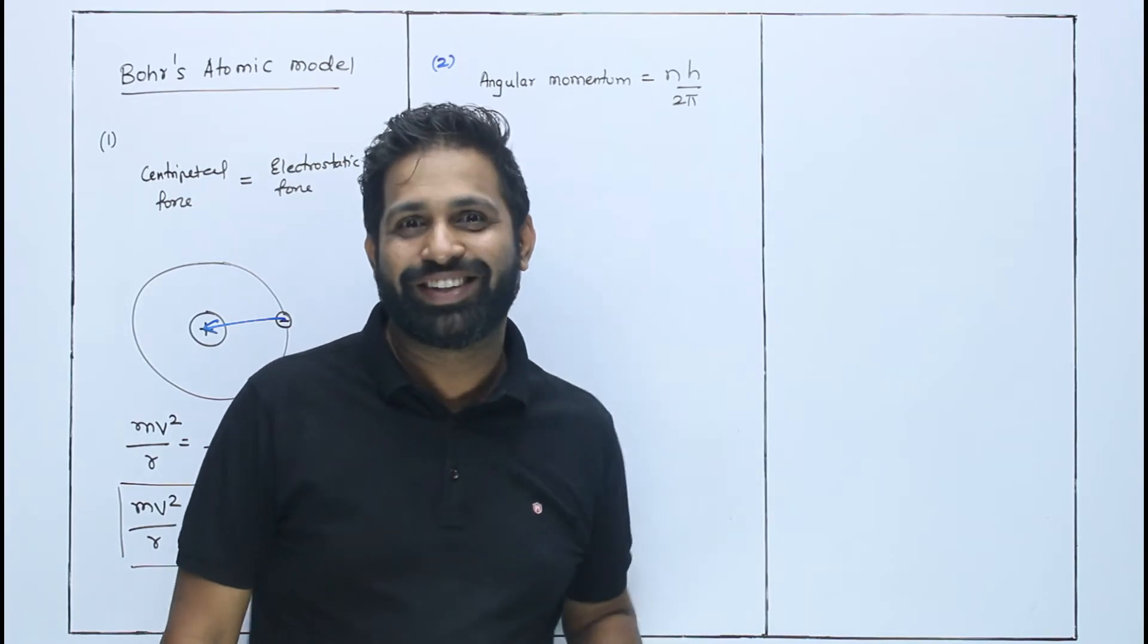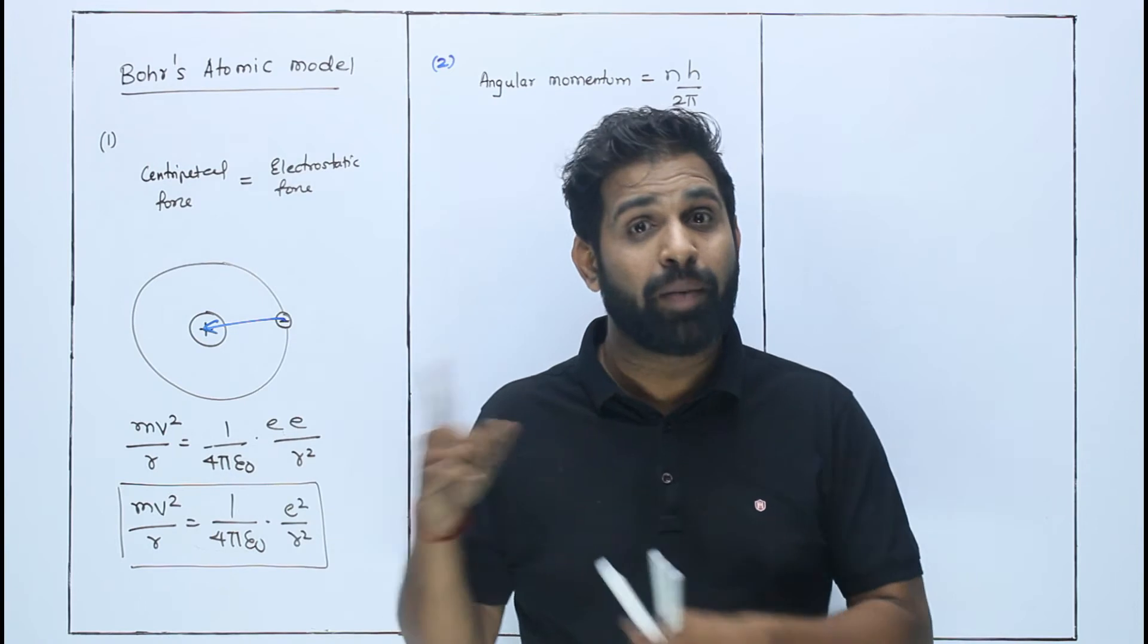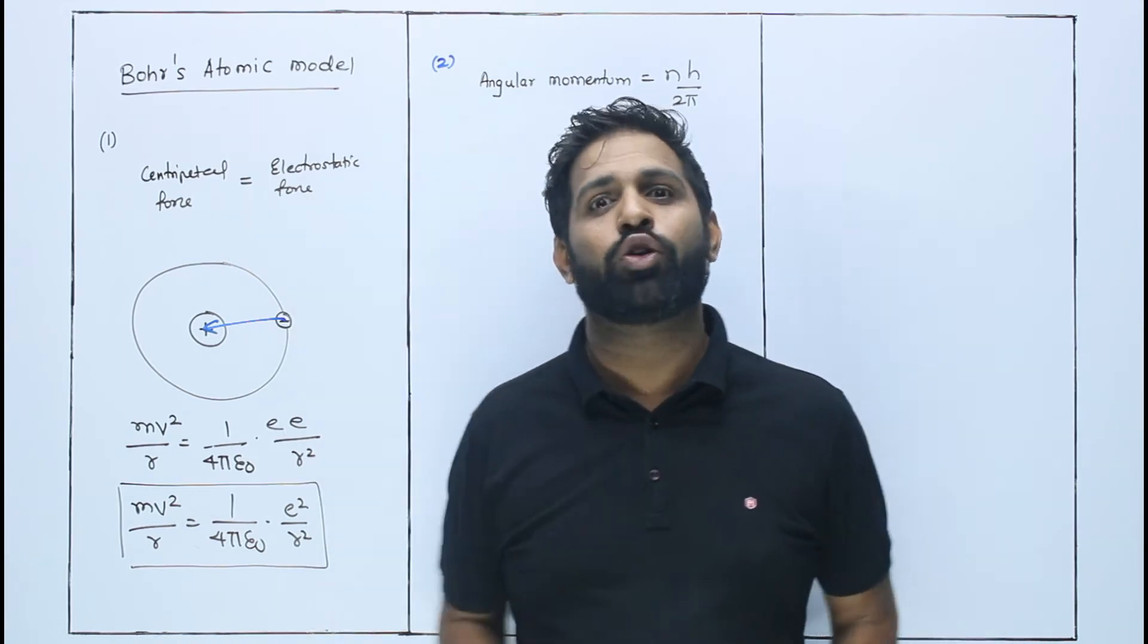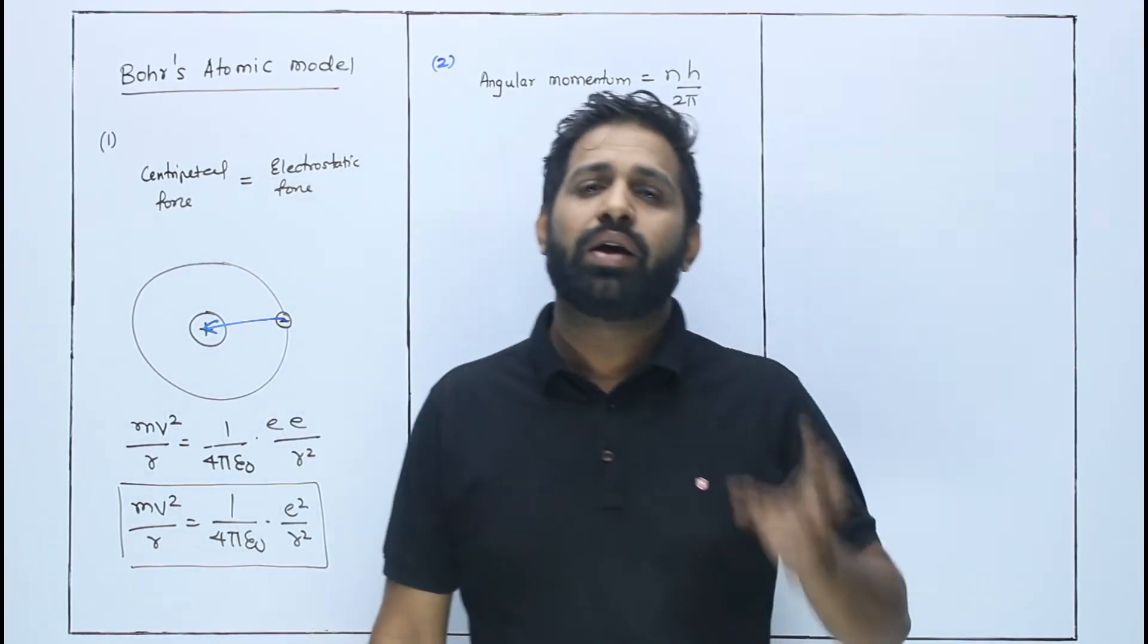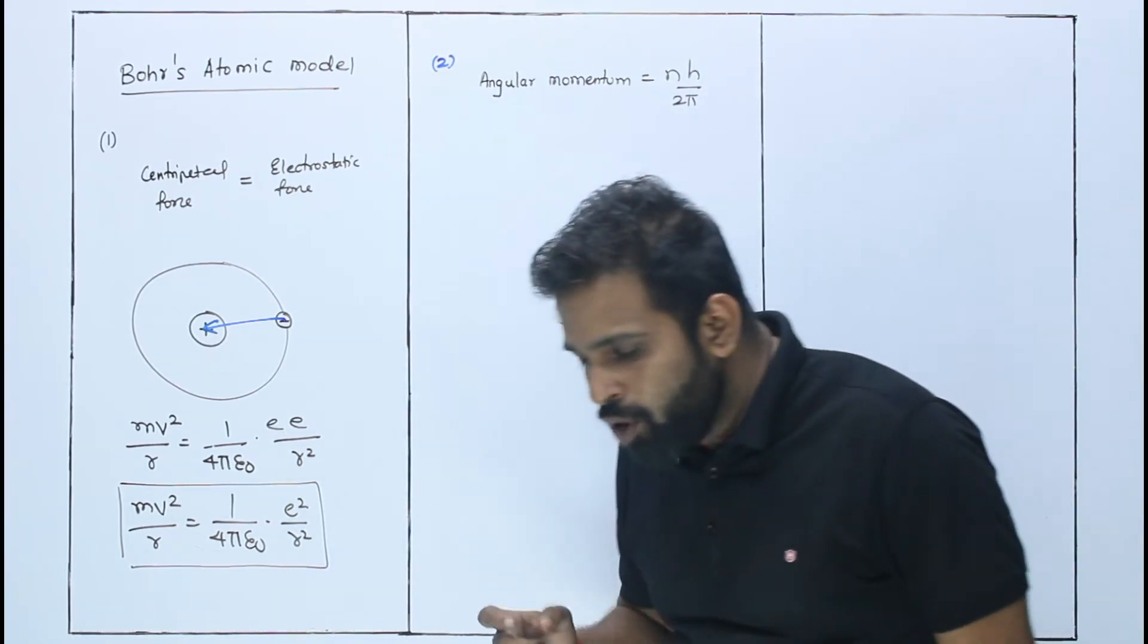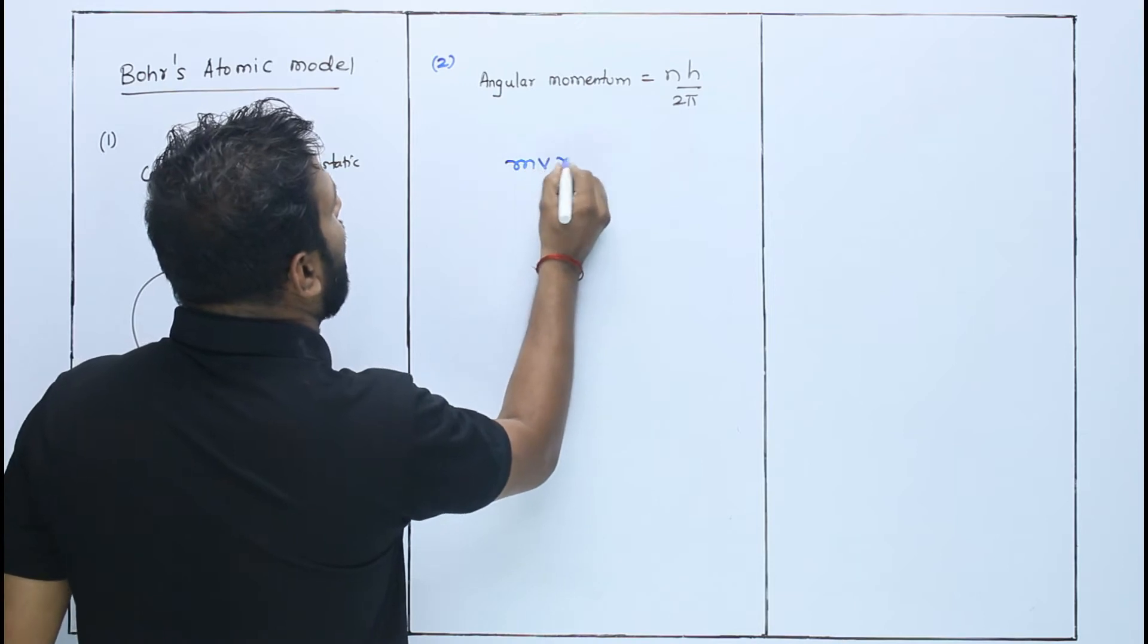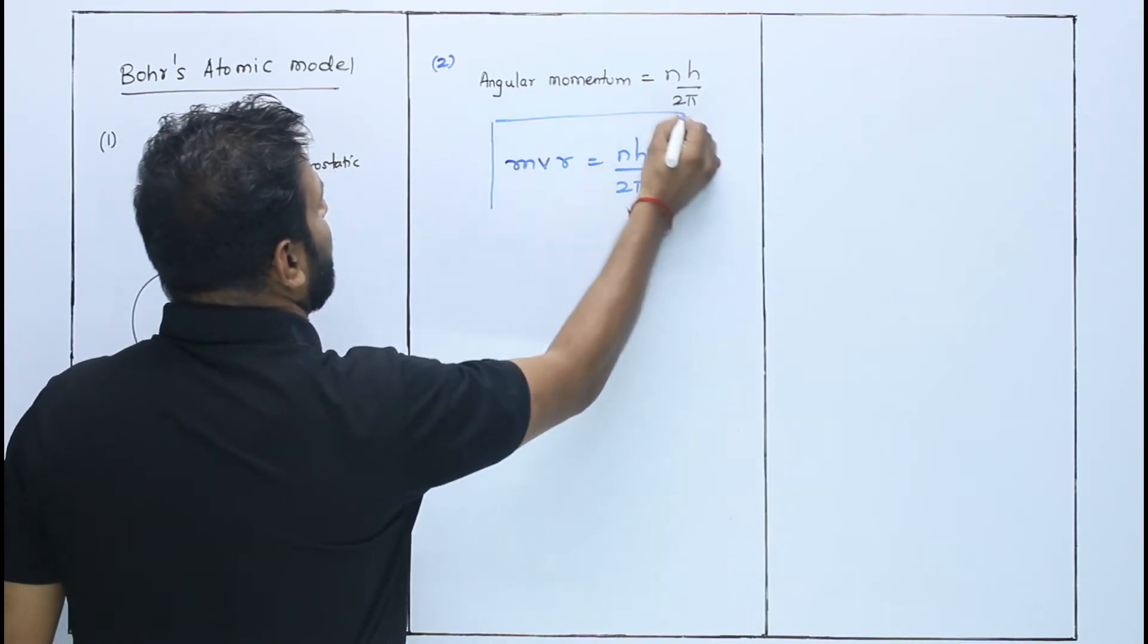Later it was proved by de Broglie. You may have studied this in previous chapter, or will study later. He proved this second postulate using his own concept, his own hypothesis. It's a very interesting thing about Bohr that we won't study here, but will study in CD lectures and entrance lectures. So, angular momentum is integral multiple of h / 2π. Angular momentum formula is mvr = nh / 2π. So this is Bohr's second postulate.